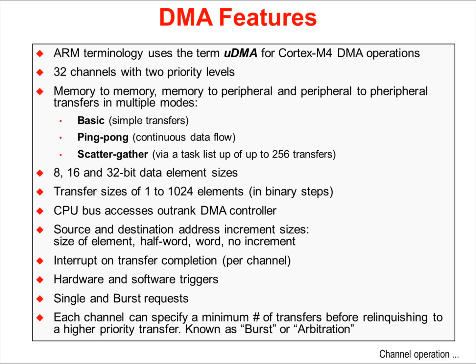The processor can be interrupted when the channel transfer is complete. Both hardware and software can trigger a microDMA transfer. CPU bus access outranks the DMA controller. Each channel can be configured with a minimum number of transfers to make before relinquishing control to a higher-priority transfer. This is known as burst or arbitration. Requests can be single or burst.